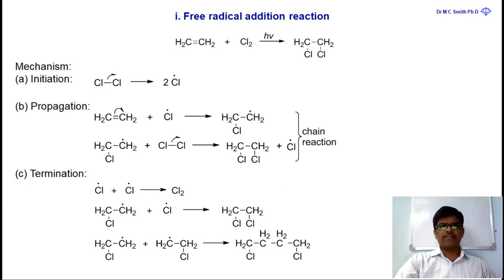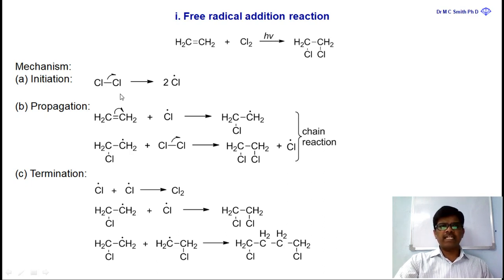The first stage of free radical addition reaction is initiation. These reactions especially undergo in the presence of light (hν). In the presence of light, chlorine molecule undergoes homolytic fission to give a free radical of chlorine.